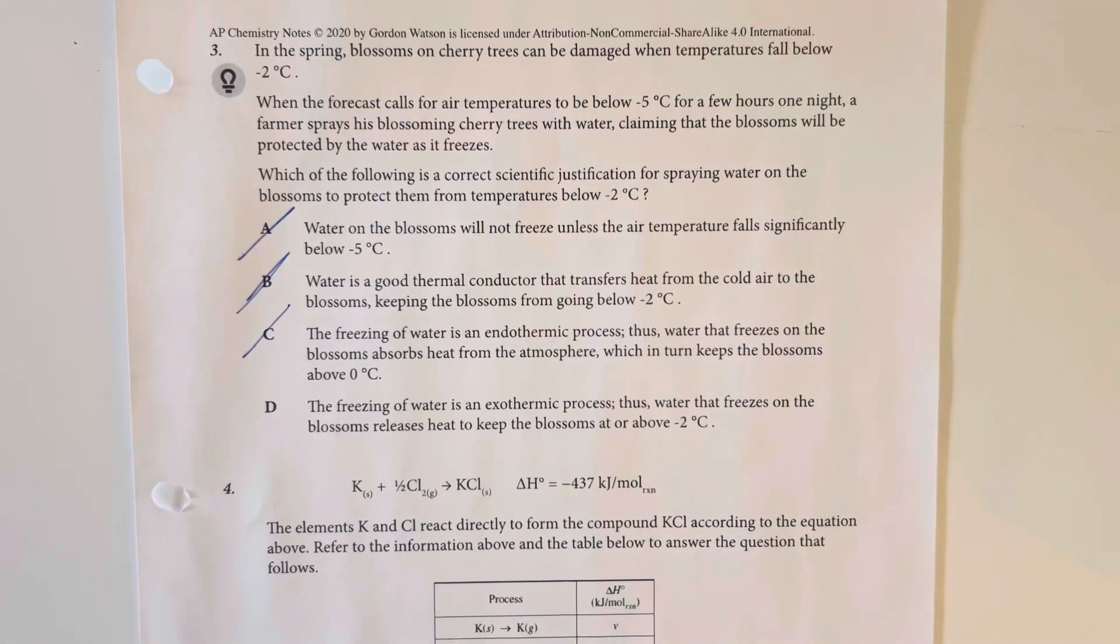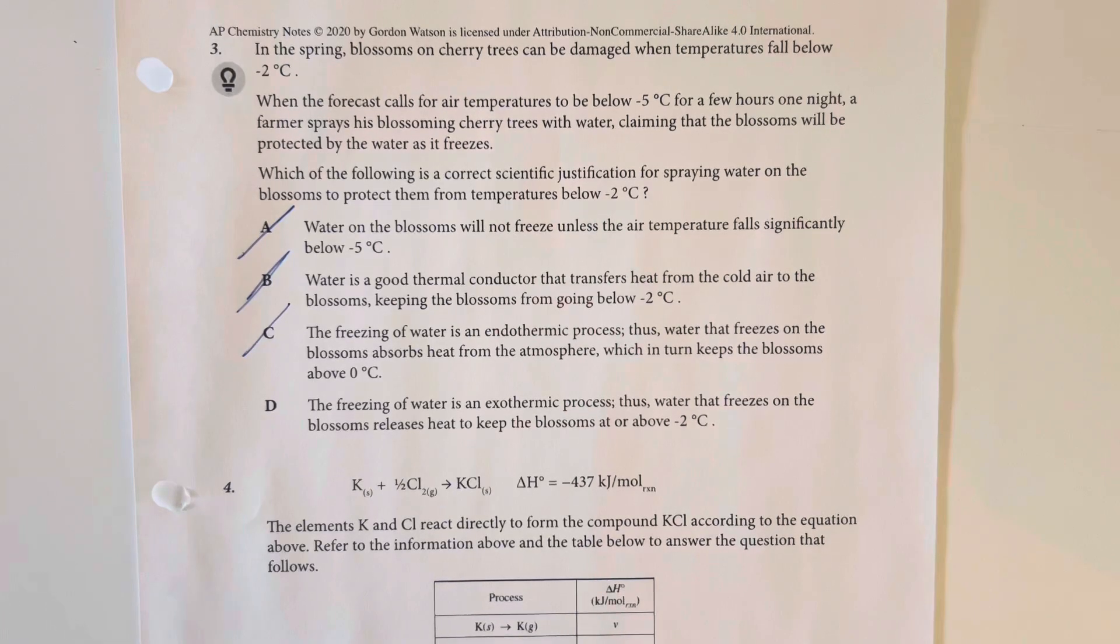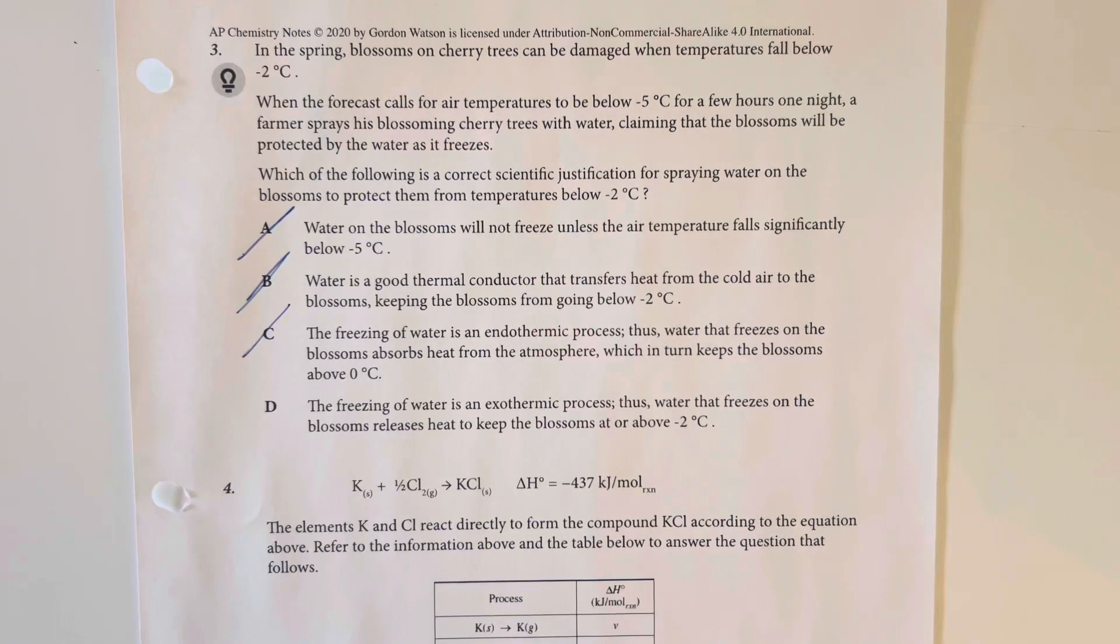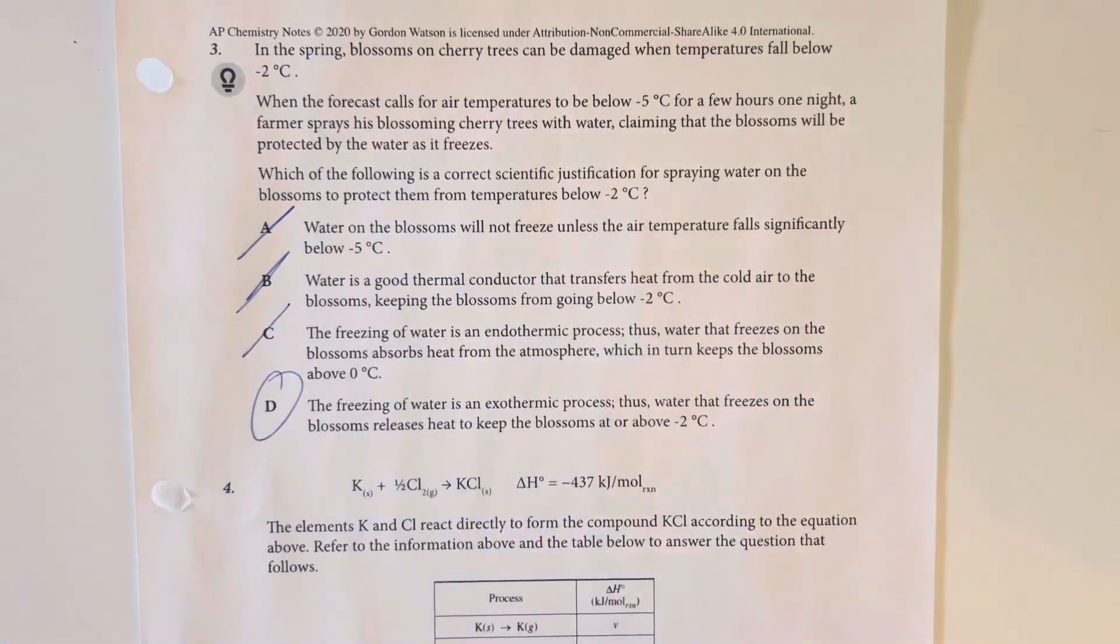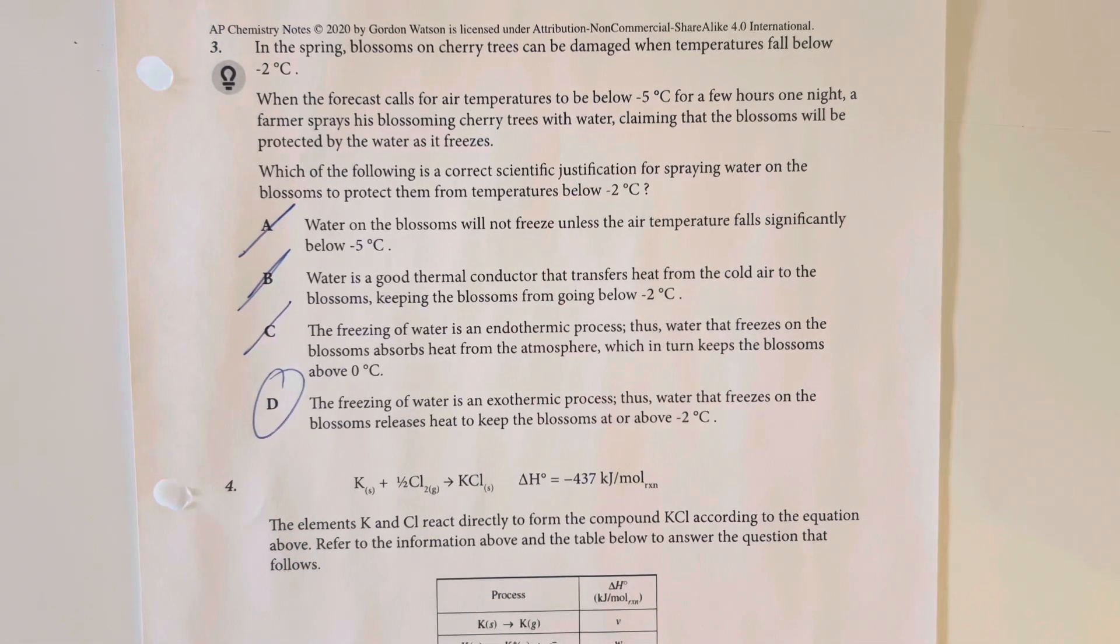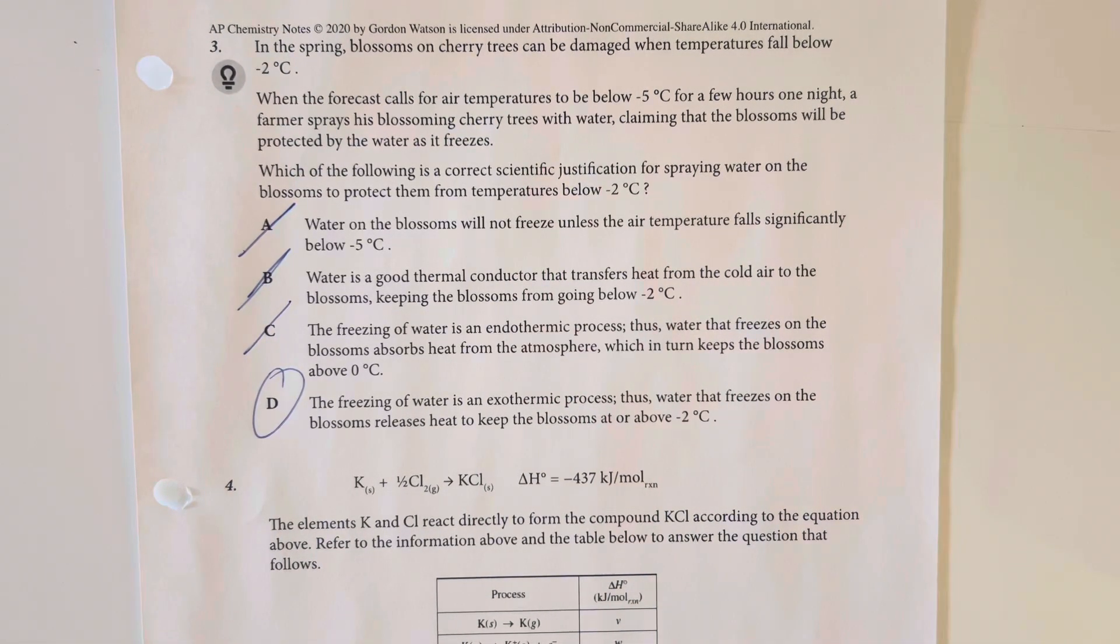D says the freezing of water is an exothermic process. Thus water that freezes on the blossoms releases heat to keep the blossoms at or above negative two degrees Celsius. That is the only one that could possibly explain the phenomenon correctly.